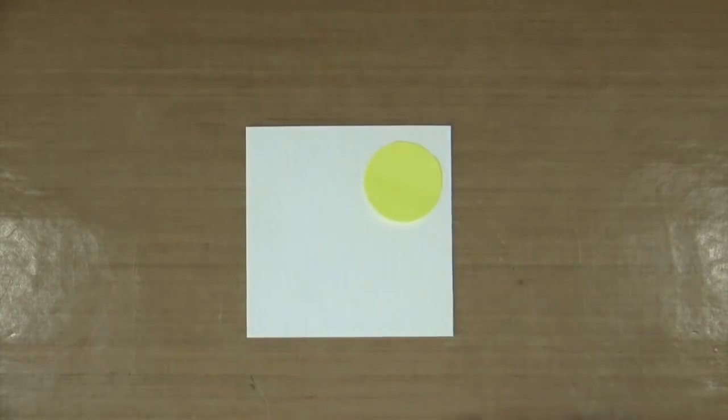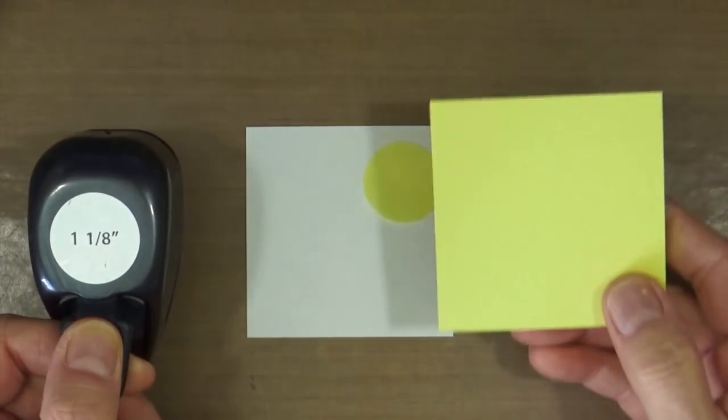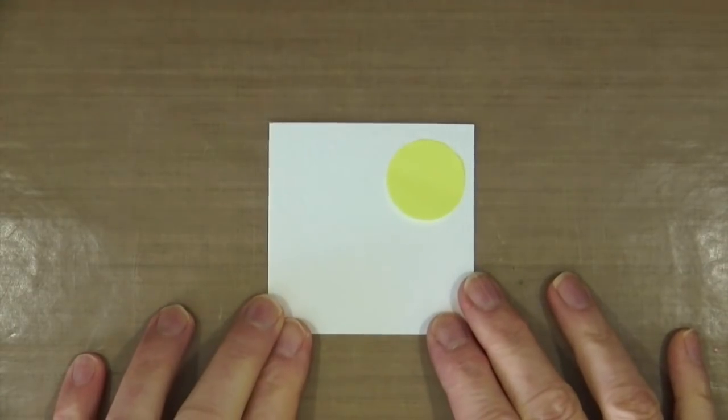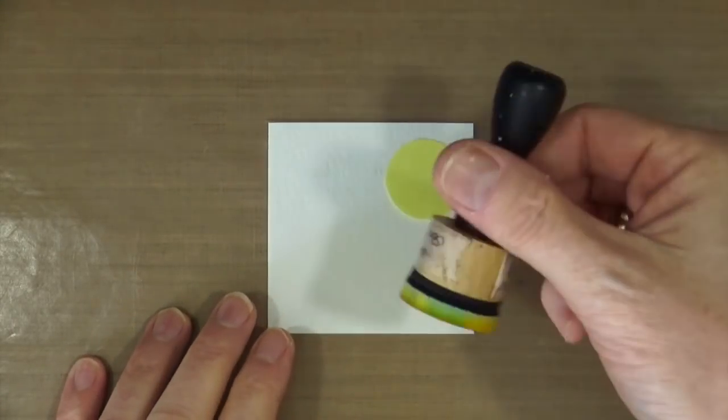I'm going to begin with a three-inch piece of watercolor card. I've punched out a 1⅛ inch circle from a post-it note and stuck it down with the sticky side to the top.